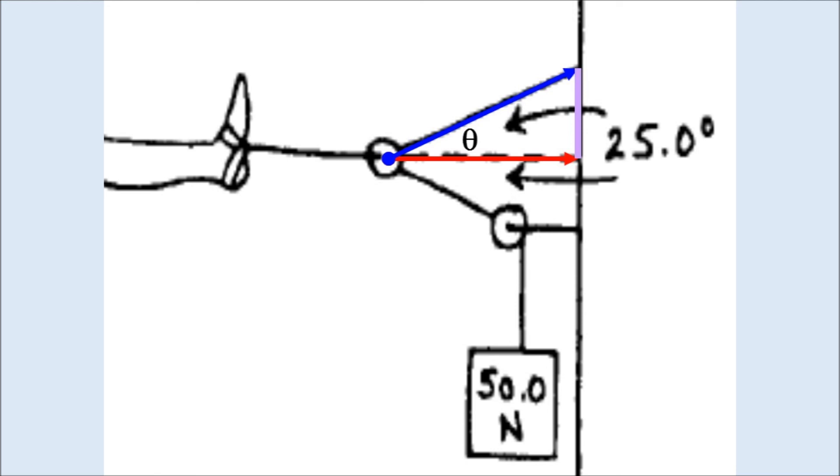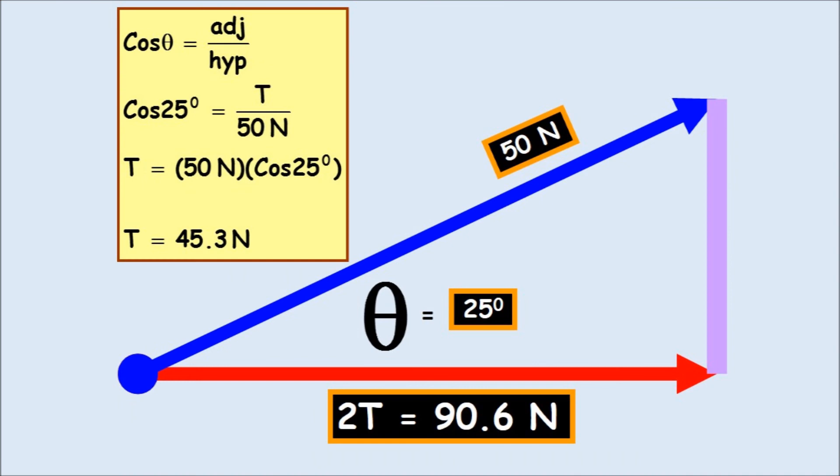So when we do this, we have to make sure that we're solving for the red line. And then we make sure that we double it. And the angle is 25. So it's going to be cosine 25 equals T over 50. Solving for T, cosine 25 times 50 is going to be 45.3.